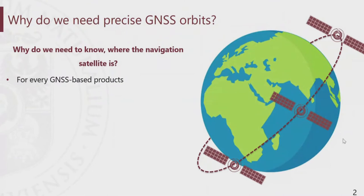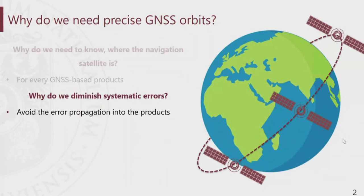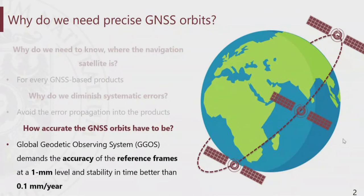Why do we want to diminish the systematic errors? Some of the GNSS-based products depend on the Earth-satellite geometry. As a result, if we have such systematic errors, we don't want them to propagate directly into our products. The current requirements of the global geodetic observing system demand the accuracy of the reference frame at a one millimeter level, and its stability in time better than 0.1 millimeter per year.